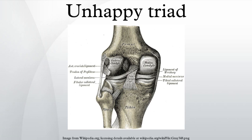It is estimated that 100,000 new anterior cruciate ligament injuries occur in the US each year. Approximately half of the new ACL injuries involve injuries to the ligament, tendon, and/or muscle of the affected knee. Women are at greater risk for ACL injuries than men due to their greater Q-angle. The Q-angle is the angle formed by a line drawn from the anterior superior iliac spine to the central patella and a second line drawn from the central patella to the tibial tubercle.